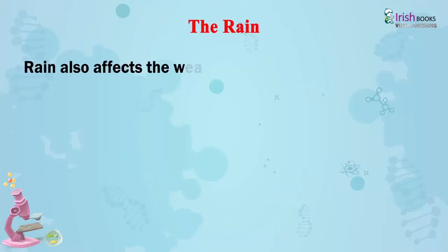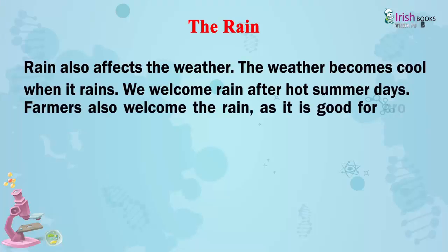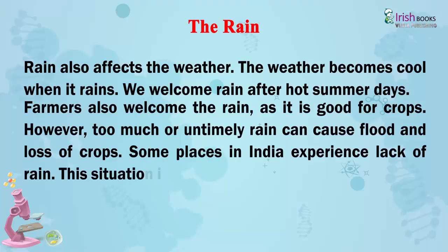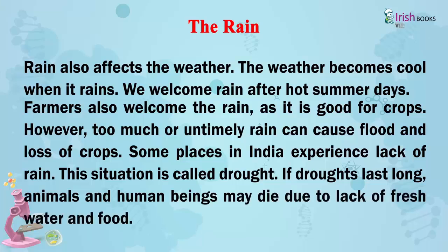The Rain. Rain also affects the weather. The weather becomes cool when it rains. We welcome rain after hot summer days. Farmers also welcome the rain as it is good for crops. However, too much or untimely rain can cause floods and loss of crops. Some places in India experience lack of rain — this situation is called drought. If droughts last long, animals and human beings may die due to lack of fresh water and food.